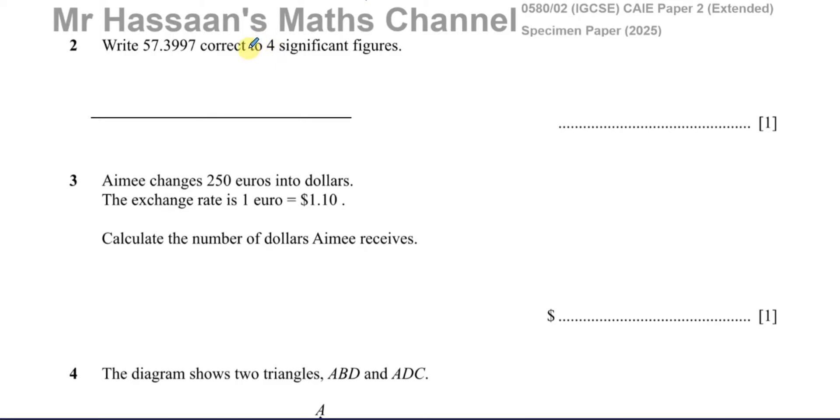Now a significant figure is the first non-zero number that you see as you're going from left to right in the number. So the first number we see is a five. That is considered a significant figure, so we start counting from that number itself.